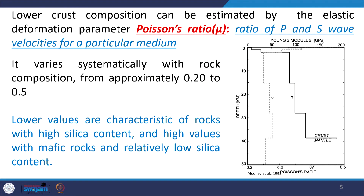Lower crustal composition can be estimated by the elastic deformation parameter, that is Poisson's ratio. Poisson's ratio comes from the ratio of P and S wave velocity. The P and S waves are generated from earthquakes or shock waves — these are called body waves. During an earthquake, P and S waves and other surface waves are generated. The P wave travels faster than the S wave and travels throughout the globe, while the S wave cannot penetrate the outer core due to its liquid nature.